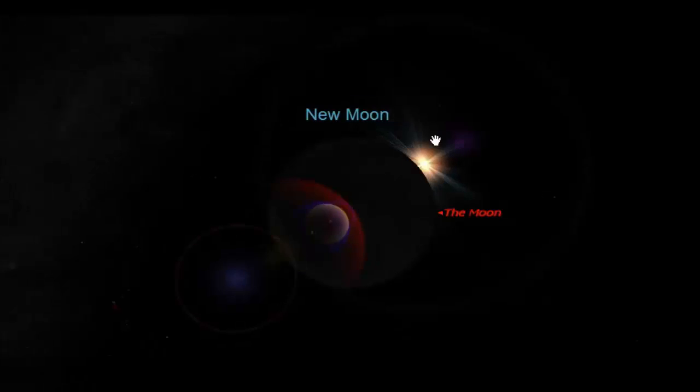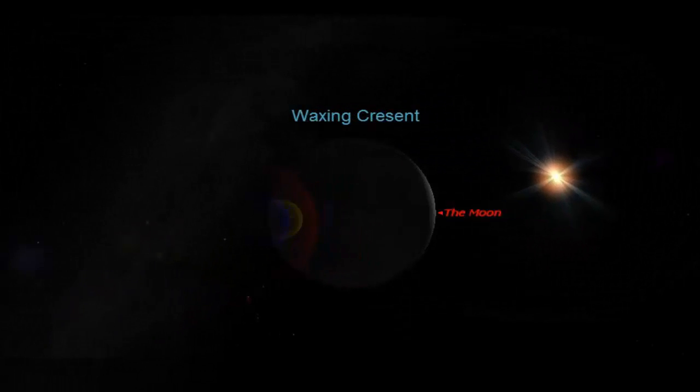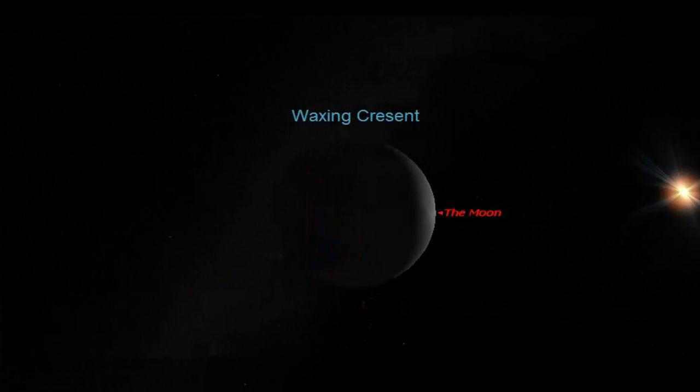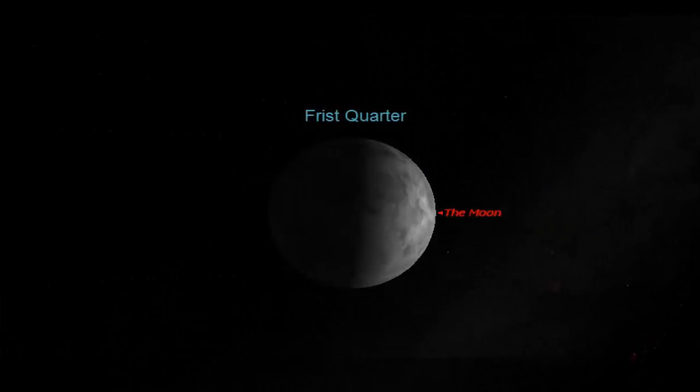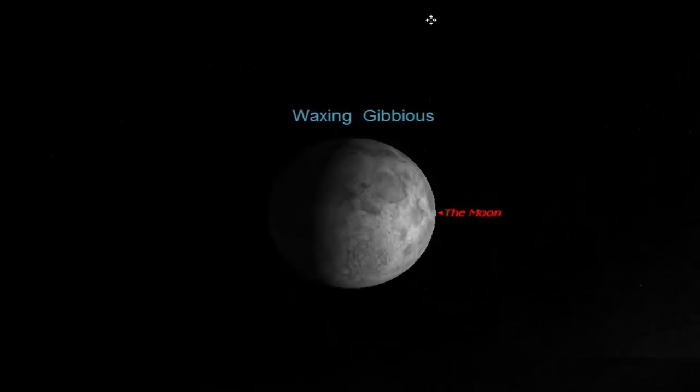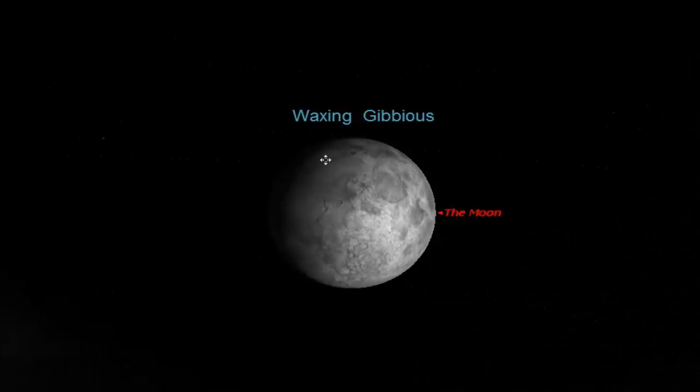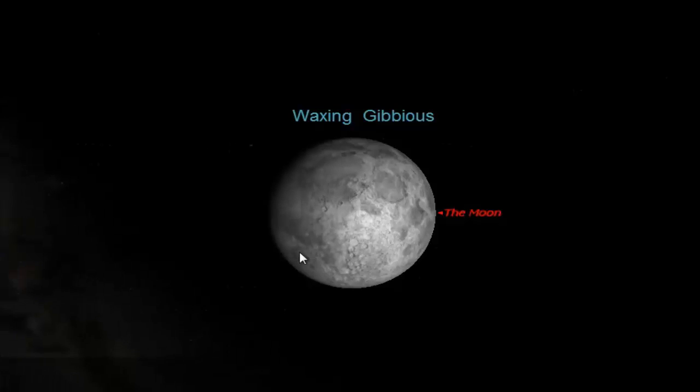Notice the features that we see don't change. They may be in shadow, they may be in light, but they don't change. We only see half the moon.